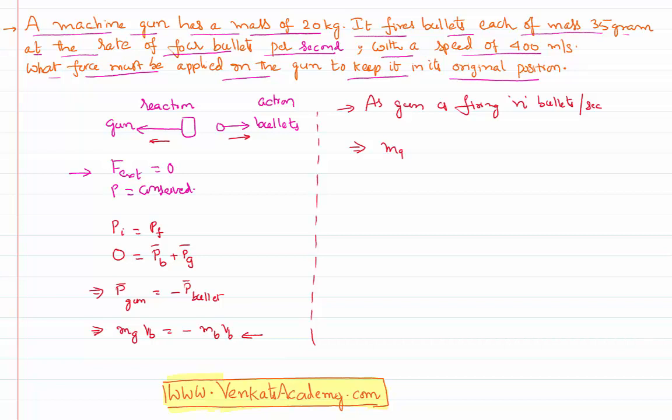So I can write mass of the gun times velocity of the gun divided by time equals minus mass of the bullet times velocity of the bullet times the number of bullets fired per second.